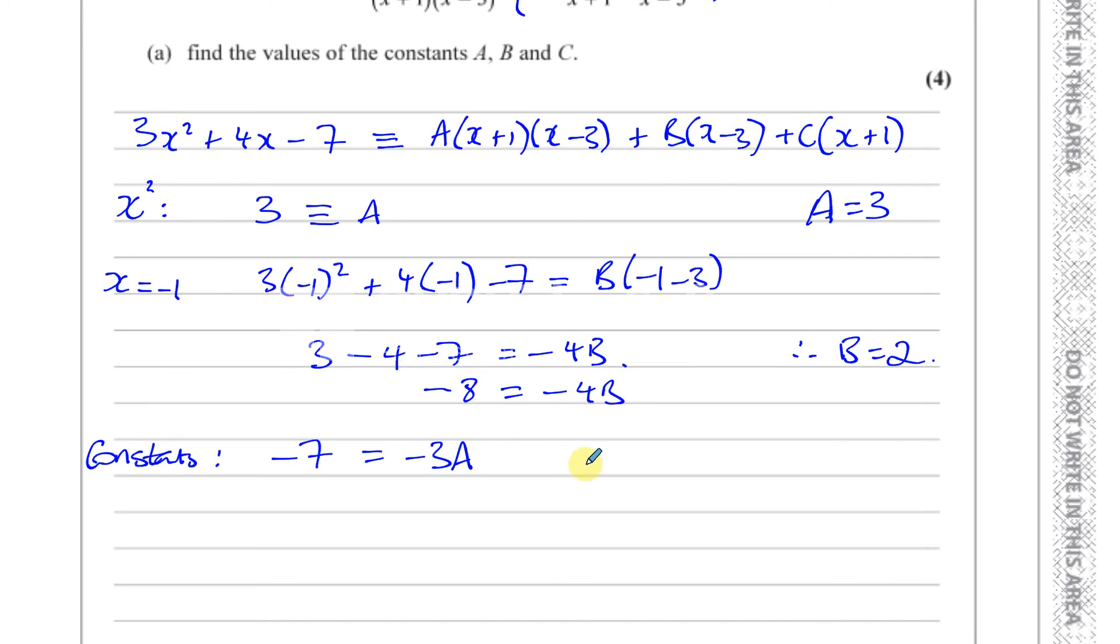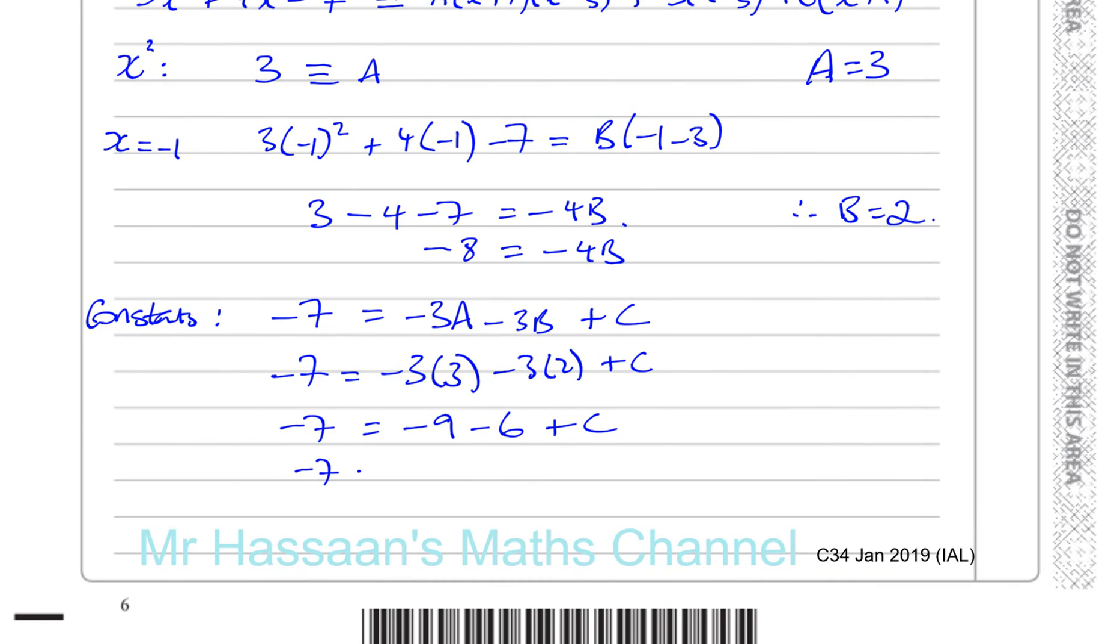And you're going to have +C. We already know what A and B are, so you can say -7 is equal to -3 times 3, which is -9, and -3 times 2, which is -6. So you have -7 is equal to -9 - 6 + C. Now -9 - 6 is -15, so C is going to be -7 + 15. So we can say C is equal to 8.